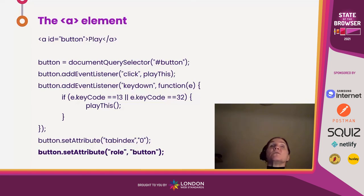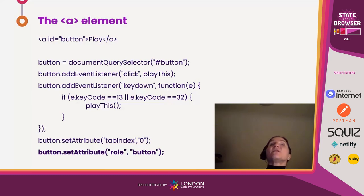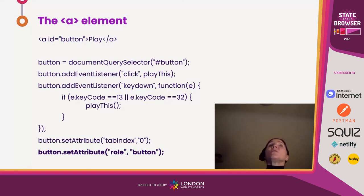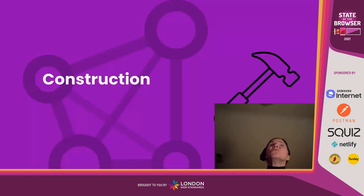Now we have accessible role, name, and the appropriate keyboard and mouse interaction. You might well be thinking that's an awful lot of extra code just to make a button work — and you're absolutely right. The further away you move from anything that has implicit semantics or implicit interaction support, the more code you have to write, and that means the more brittle your thing is. So wherever possible, it's always worth keeping things as simple as you can.